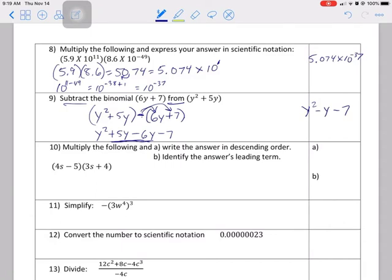Number 10 says multiply and write the answer in descending order. So you can FOIL or distribute however you want to refer to that. First, 4 times 3 is 12. And then remember, we're going to be adding exponents when we multiply bases that are the same. So this is s, 1 plus 1 is 2. Over here, this is plus 16s. Right here is negative 15s. And then from here to here is negative 20.